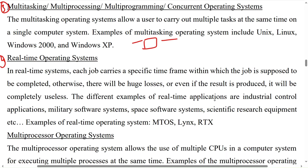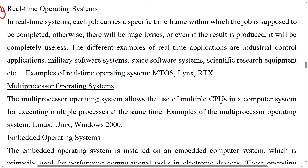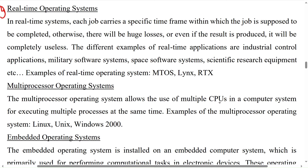Within a fraction of a second, a real-time system will provide your output. The fifth one is multiprocessing system. The multiprocessor operating system allows the use of multiple CPUs in a computer system for executing multiple processes at the same time. Examples of multiprocessor operating systems are Linux, Unix, and Windows 2000.